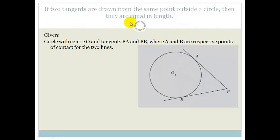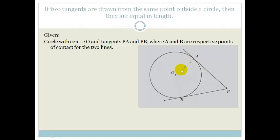The first theorem we're going to go through is: if two tangents are drawn from the same point outside a circle, then they are equal in length. We're given a circle O and we're told that there are two tangents PA and PB, where A and B are the points where the tangents touch the circle. We need to prove that AP equals BP. I'm going to construct a couple of lines — first the radii OA and OB, perpendicular to the tangents, and then I'm going to join OP.